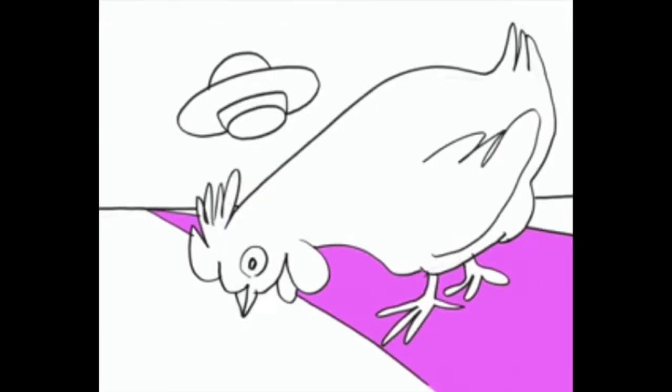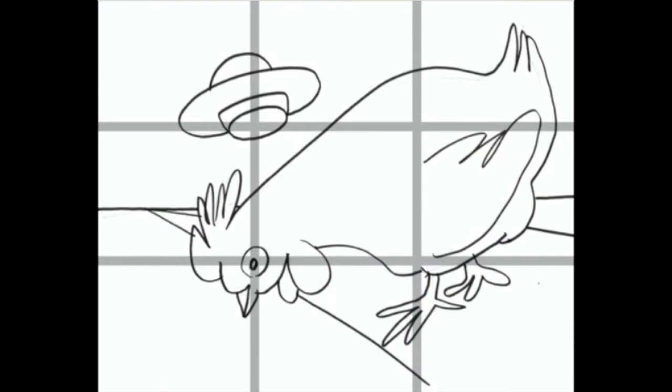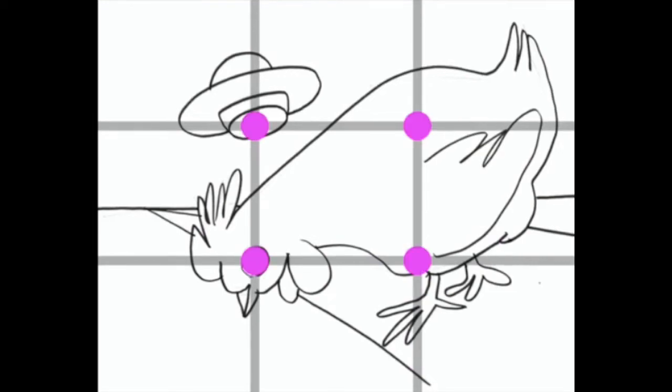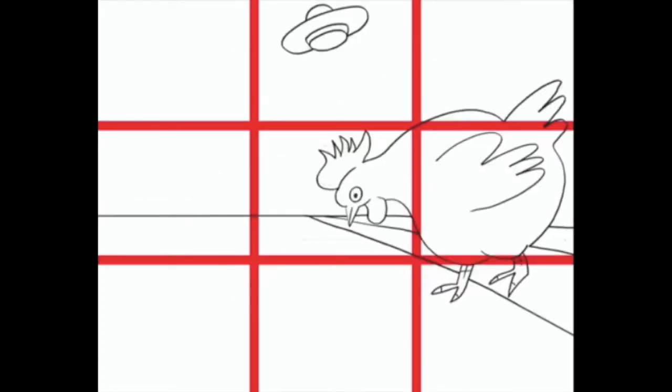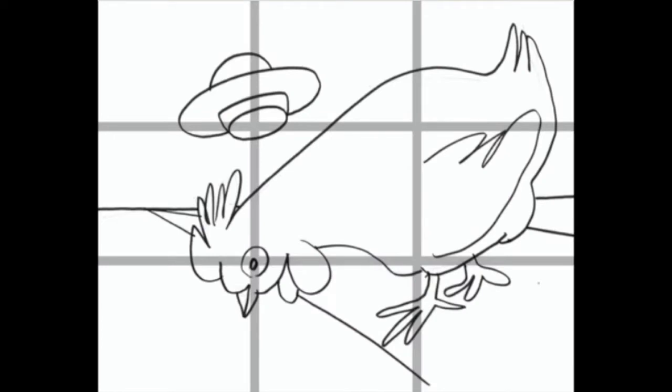If an element isn't as important, like the road, it doesn't need to go over any of the crossings. The main thing you want the viewer to look at should go over a crossing. You don't want to have nothing connected to the crossings like this. This is much better.